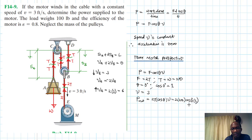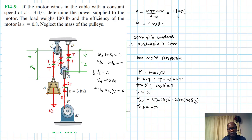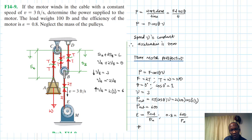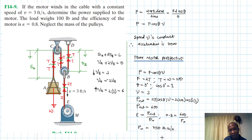Power out equals 2 times 100 times 3, which is 600 ft·lb/s. We know that efficiency equals power out divided by power in. So 0.8 equals 600 divided by power in. Therefore, power in equals 600 divided by 0.8, which gives us 750 ft·lb/s.